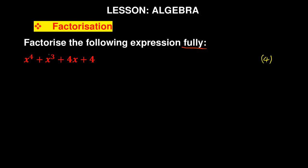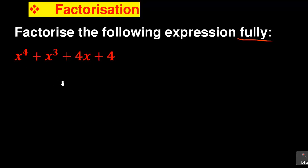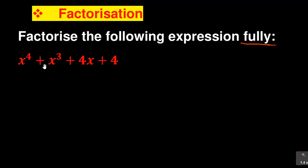You are given x to the power 4 plus x to the power 3 plus 4x plus 4. Whenever you are given four items, this is item one, two, three, and four. The best thing to do is to factorize by grouping where you take the first two and group, and take the last two and group.